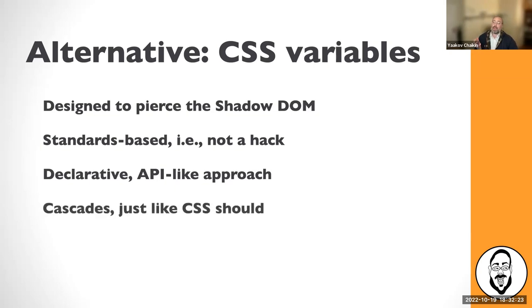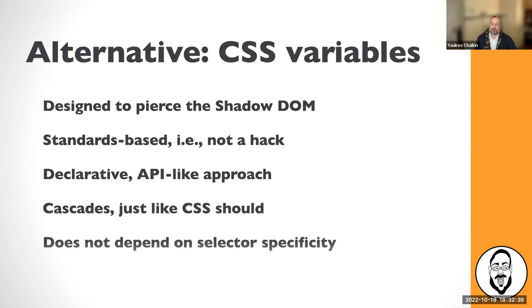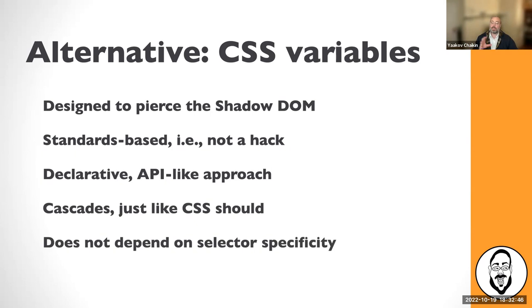CSS variables cascade just like CSS should. If you declare a variable and define it at a particular level on the DOM, it's not going to bleed all over — it'll apply to that element and anything below it and will not bleed anywhere else. And it does not depend on selector specificity, so no more fighting with very complex internals of a component.